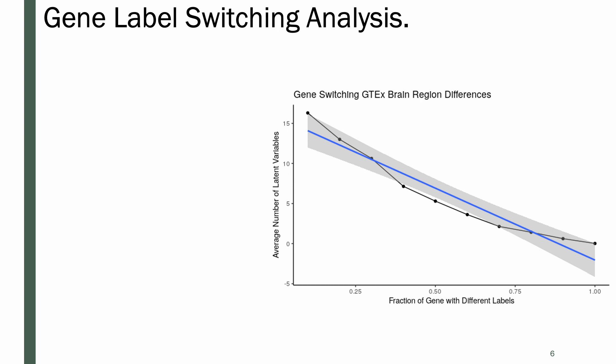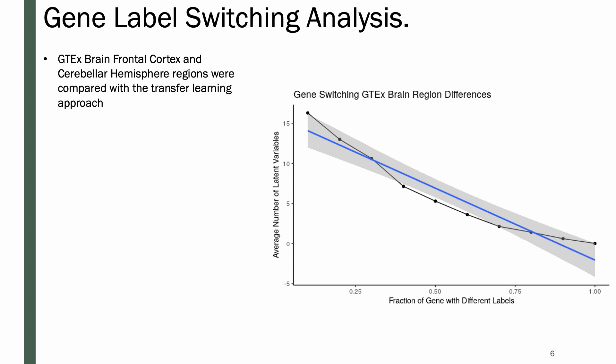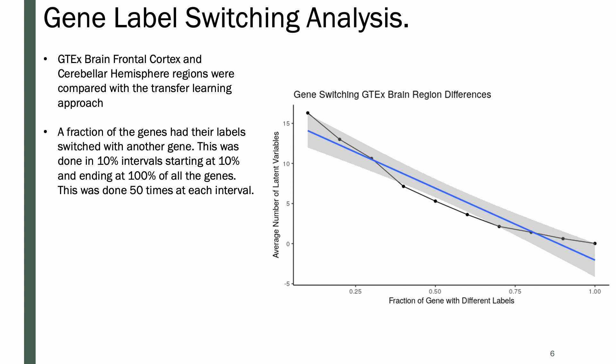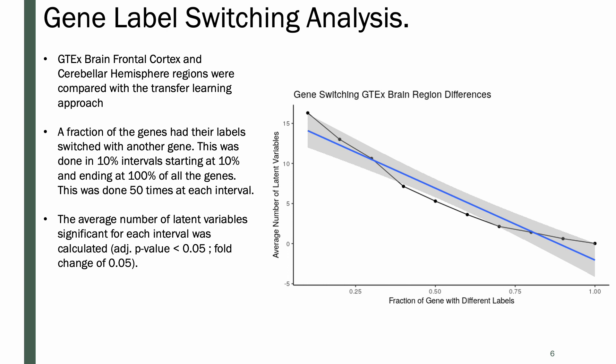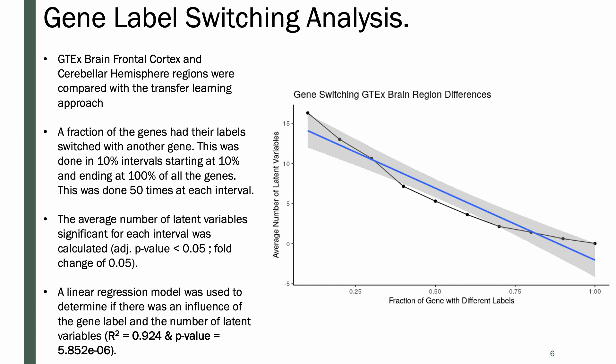One of the first things we wanted to evaluate was how well transfer learning was transferring information. In this approach, information is transferred by the gene labels, so our hypothesis was that switching gene labels would decrease the number of latent variables. We took GTEx brain frontal cortex and cerebral hemisphere samples and compared them using the transfer learning approach. We took a fraction of genes, starting at 10% and going to 100%, and switched their labels, repeating this 50 times at each interval. The average number of latent variables at each interval was used in a linear regression model to determine whether gene labels influence the number of latent variables.